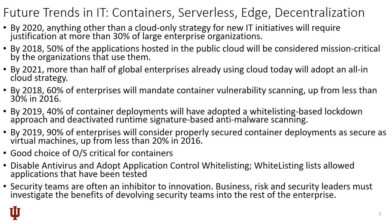By 2021, more than half of the global enterprises already using cloud computing today will adopt an all-cloud strategy. That means the number of data centers will be going down, but we will be seeing a rise in cloud infrastructure and cloud services offered by vendors and infrastructure providers. By 2018, 60 percent of enterprises will mandate container vulnerability scanning, up from 30 percent in 2016, so we will be looking at increased security activities in this area.